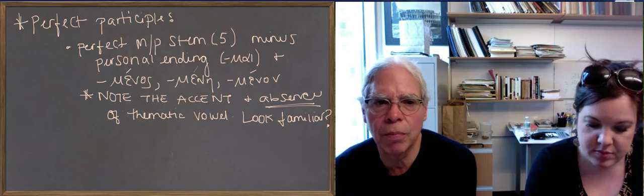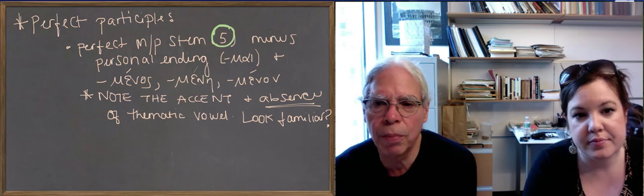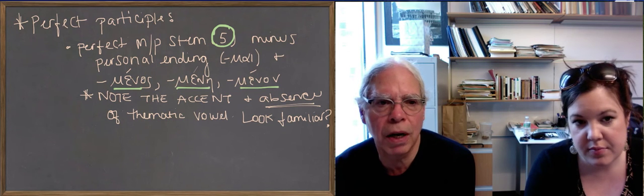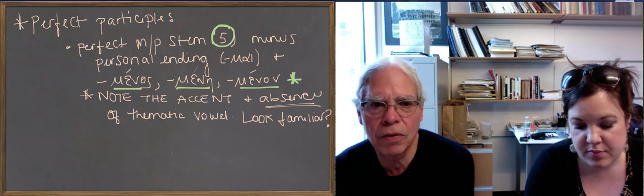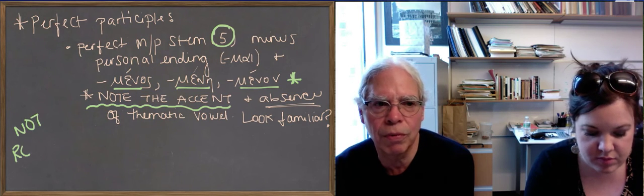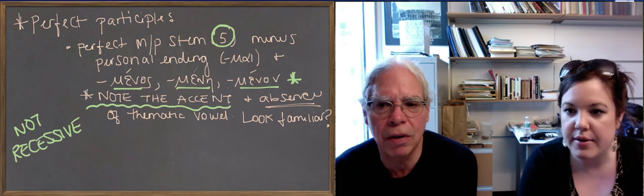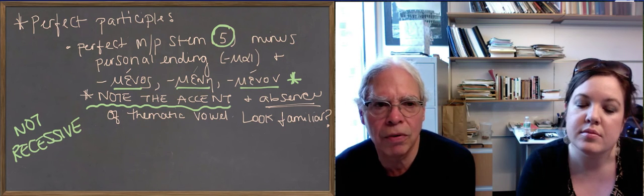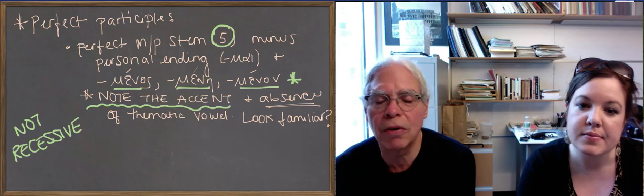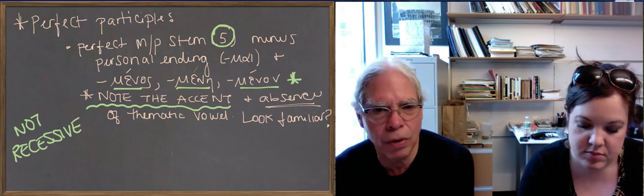Now let's look at perfect middle and passive participles. You start with the perfect middle passive stem, the next to the last one, the fifth one, and you remove the personal ending from that form, the mai, and you add menos, mene, menon. Notice this time Balisi's put an accent every time on the e. And that's because this participle is the only one that doesn't have recessive accent of the ones that we've seen before. Well, that's not true. We saw second aorist participles don't have recessive accent. There you accent the thematic vowel. So here we have non-recessive accent of a different kind on the men of the menos suffix, which is both middle and passive. Notice also that there is no thematic vowel in the perfect middle or passive participle. Just like the perfect middle or passive indicative forms, there's no thematic vowel either.